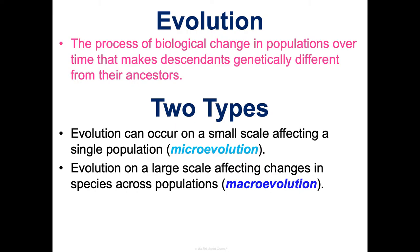A couple of key things: evolution is considered the unifying theme of biology — it ties in evidence from so many different sub-fields of biology. It's also important to know that Darwin is not the person who came up with evolution; he is the person who came up with a mechanism to explain how it occurred. For hundreds of years, scientists and biologists had been observing evolution happening but not knowing how. Darwin just provided an explanation for how it happens.